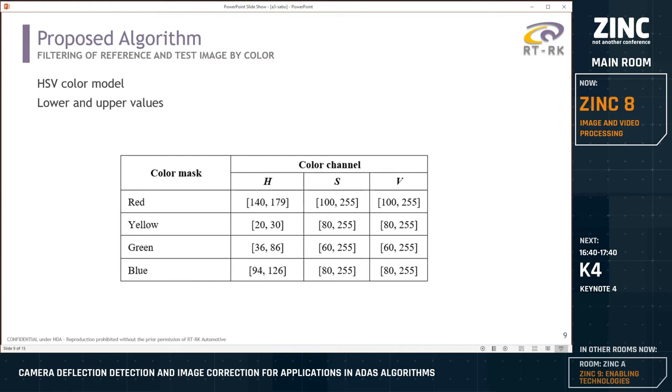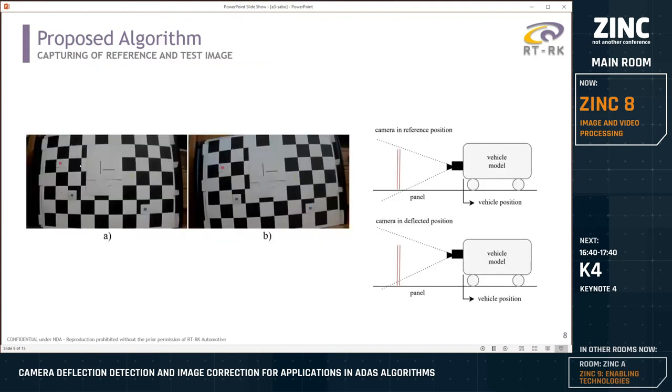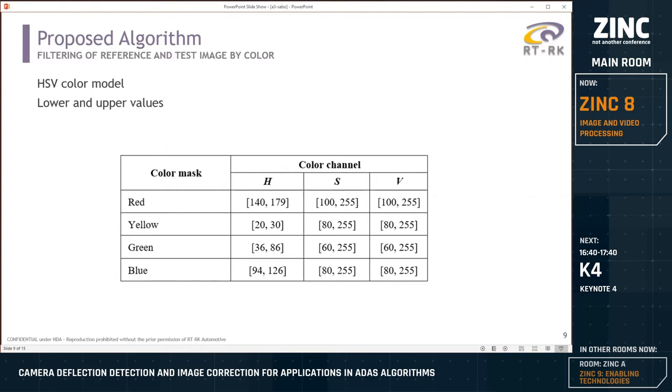Reference and test images were filtered using HSV color model and upper and lower values of red, yellow, green, and blue color. On the previous slide, as you can see, I have four key points. Yellow is not seen very well, but if you can see my mouse, you can see where it should be. So I had red, yellow, green, and blue key points that I detected, and I used these values from the table to find them on the pictures.